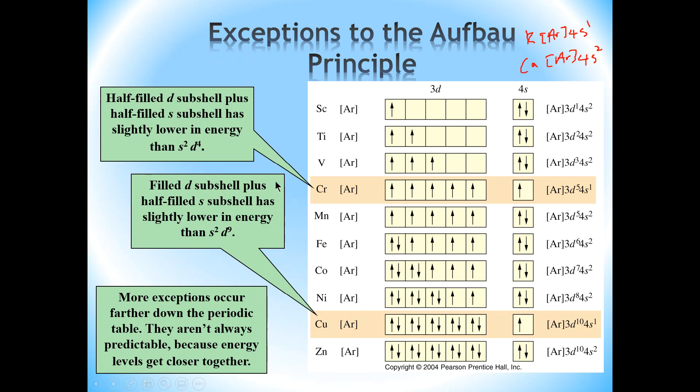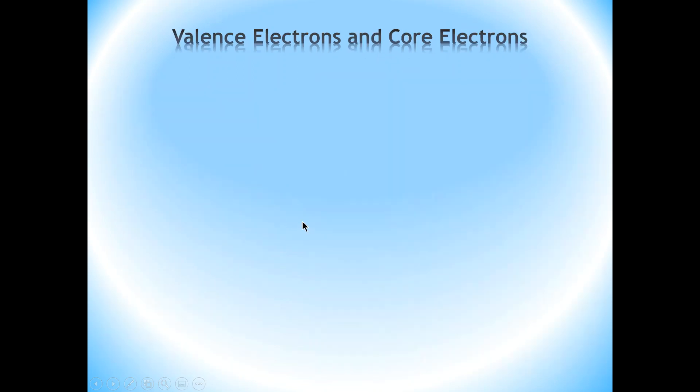That's basically it for this video. The next video will deal with the difference between valence electrons and core electrons, and how we determine the electron configuration of ions.